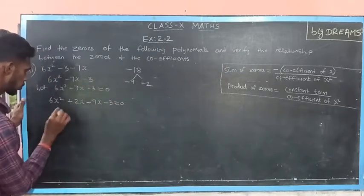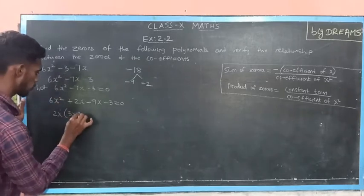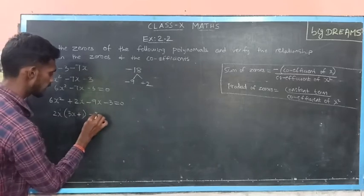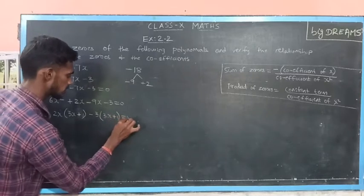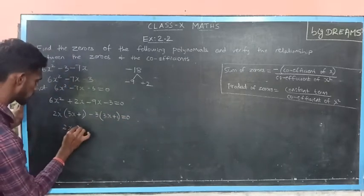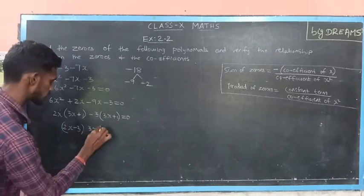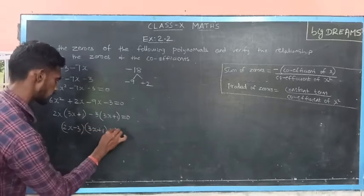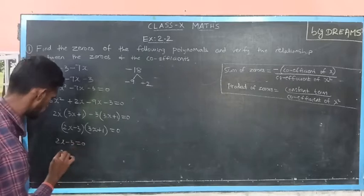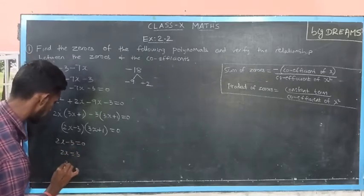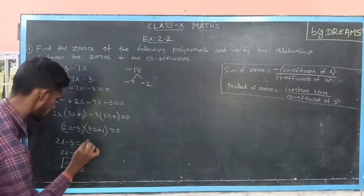Taking out 2x as common, I will get 3x plus 1, and here taking minus 3 as common, I get 3x plus 1. Writing this term: 2x minus 3 into 3x plus 1. Then 2x minus 3 is equal to 0, so 2x is equal to 3, and x is equal to 3 by 2, which is one of the zeros.